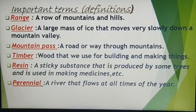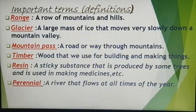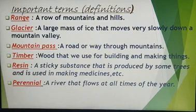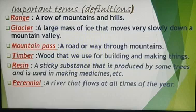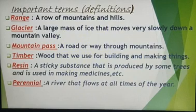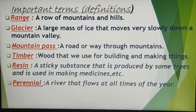Before I end, I want to discuss some important terms. First, a range: a row of mountains and hills is known as a range. A glacier: the Gangotri glacier, from which the River Ganga originates, and the Yamunotri glacier, from which the River Yamuna originates. A glacier is a large mass of ice that moves very slowly down a mountain valley. It accumulates from heavy snowfall, but when the temperature increases, this river of ice starts to melt and flow down.